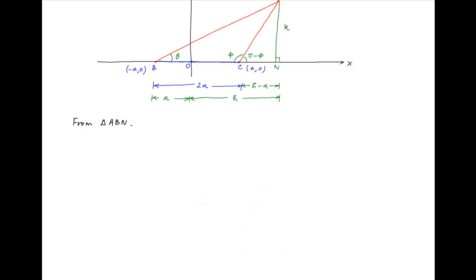Applying Pythagoras theorem on right angle triangle ABN, we get AB² is equal to AN² plus BN², which is equal to k² plus (h + a)².